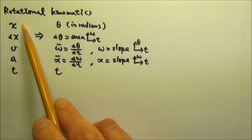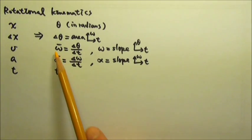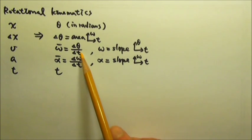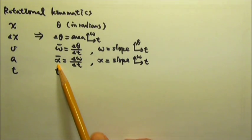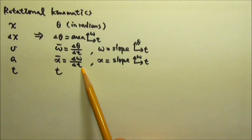Just like kinematics for translational motion, the average angular velocity is delta theta over delta t, and the average angular acceleration is delta omega over delta t.